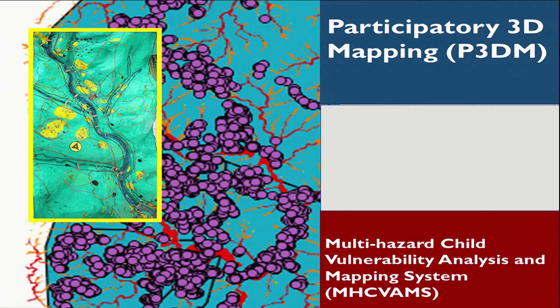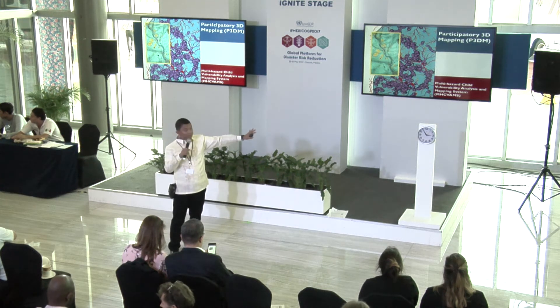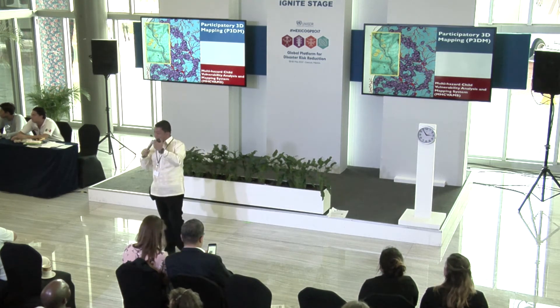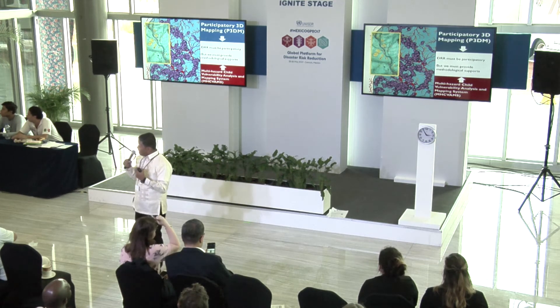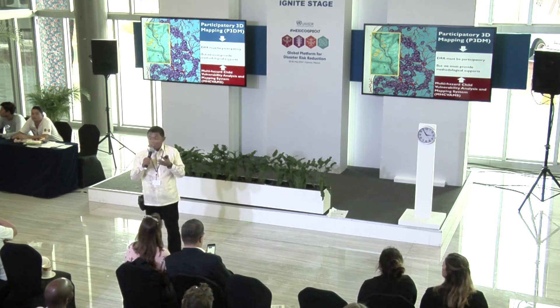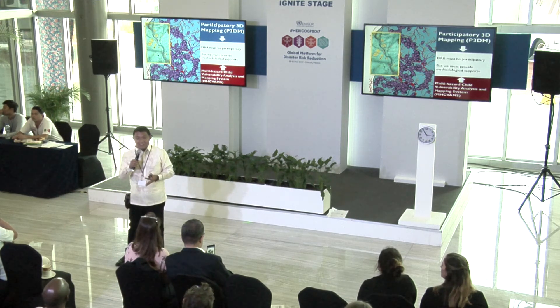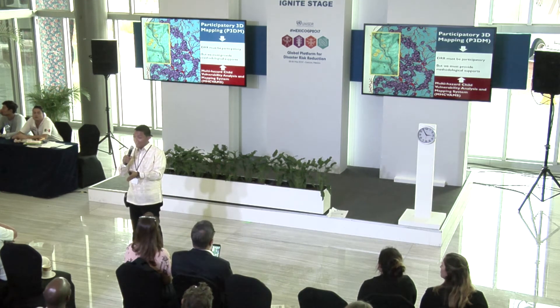So the purpose of this computer mapping system is really to integrate the knowledge in the community and vice versa, because we believe disaster risk reduction should be participatory. One lesson I have learned from my mentors is that no single person, institution, or actor has all the knowledge and skills to facilitate effective disaster risk reduction. So we really have to complement our resources, knowledge, and skills. We should not stop at theoretical frameworks — we must provide methodological support, and this project proves that is possible.